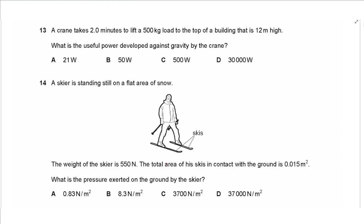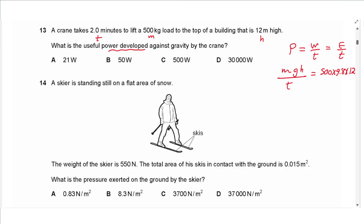Question 13: A crane takes 2 minutes to lift a 500 kg load to the top of a building 12 metres high. Power = MGH ÷ time = 500 × 9.8 × 12 ÷ 120 seconds ≈ 493 W. Taking the closest value, answer is C.